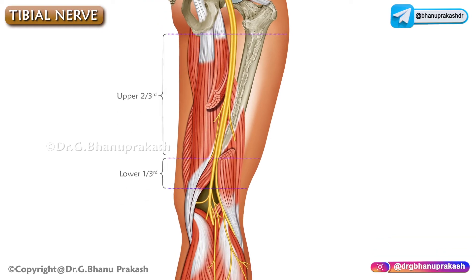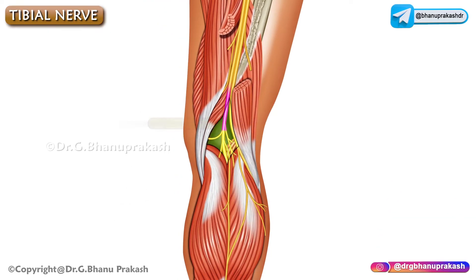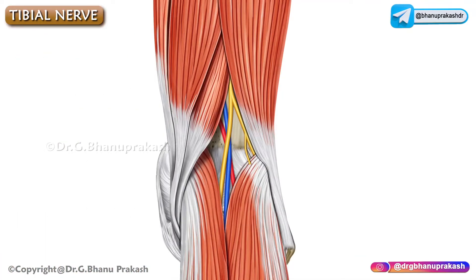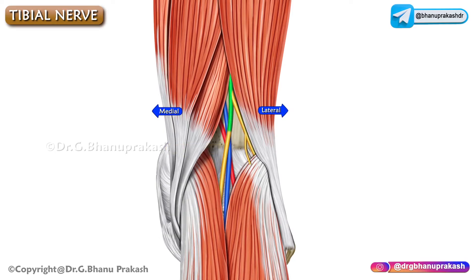The tibial nerve enters the popliteal fossa. In the popliteal fossa, it lies lateral to the popliteal vessels and becomes superficial to them at the knee as it crosses to the medial side of the artery.